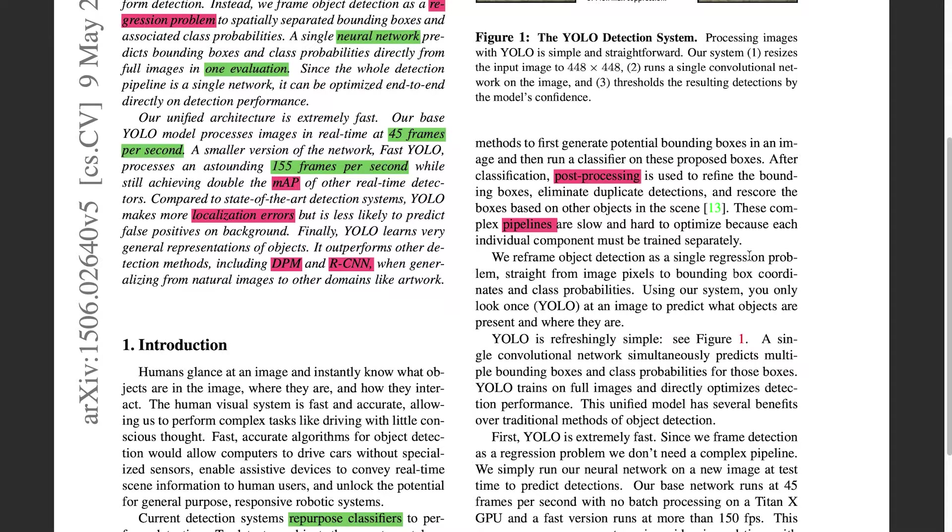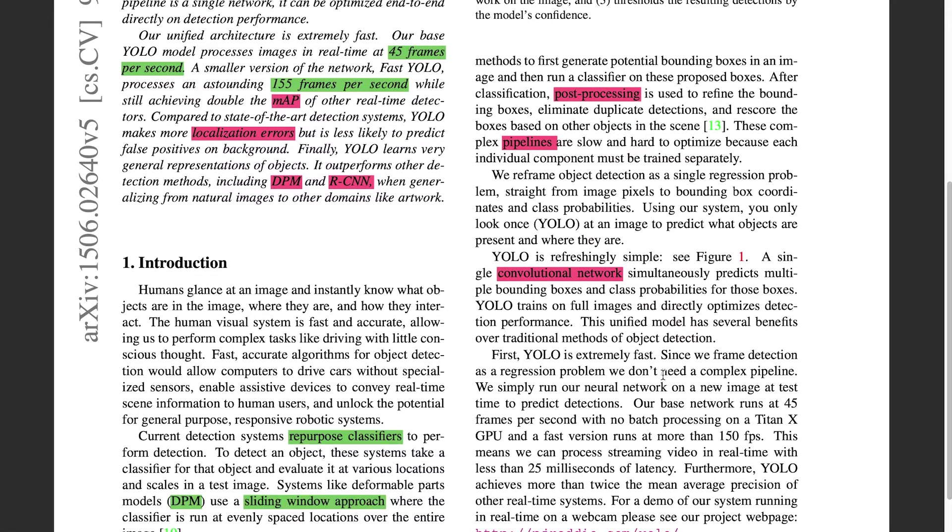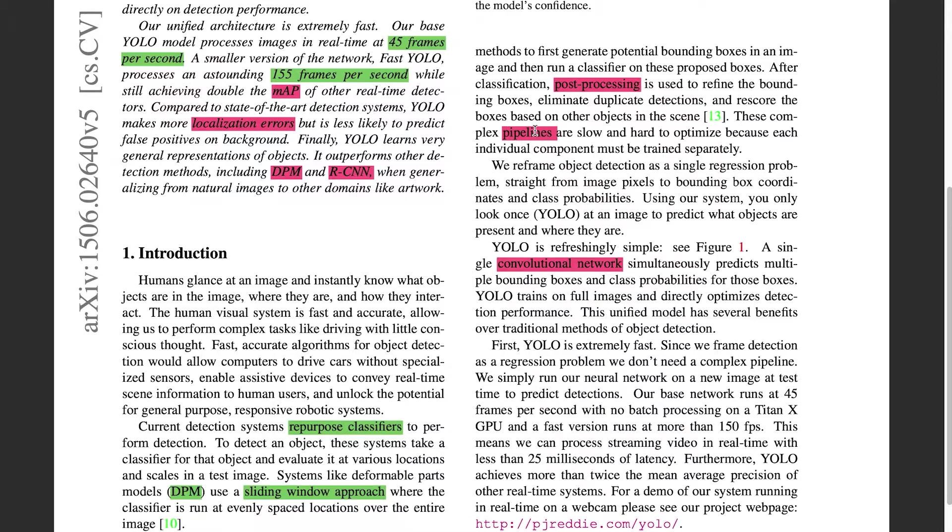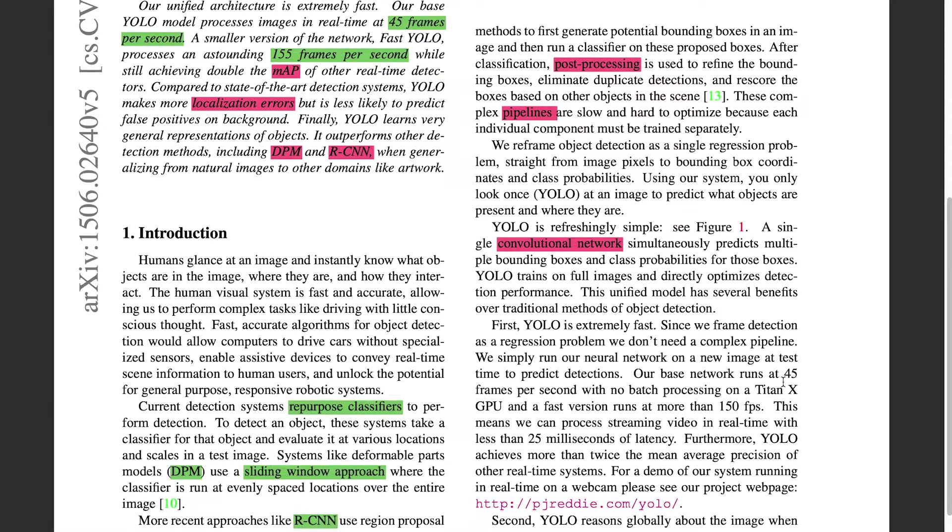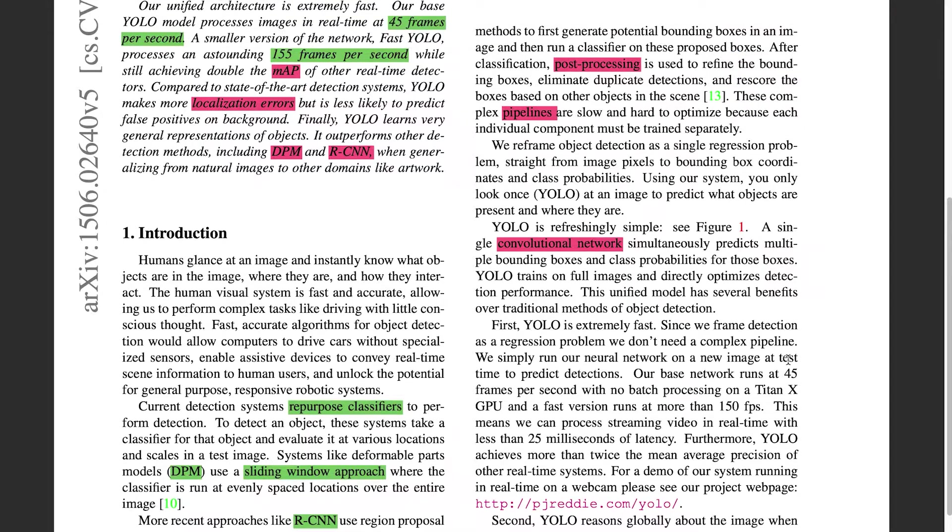We reframe object detection as a single regression problem, straight from image pixels, a bounding box, and class probabilities. You only look once, YOLO is refreshingly simple. A single convolutional, I don't quite understand what convolutional network means. Predicts multiple bounding box and class probabilities. First, YOLO is extremely fast. Complex pipeline, I've already highlighted pipeline once. Our base network runs at 45 frames per second. I'm going to highlight that in green because I understand what that means.